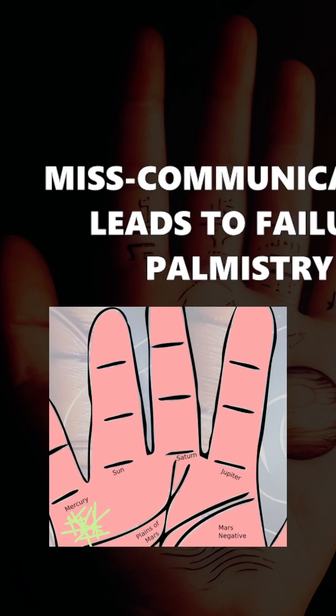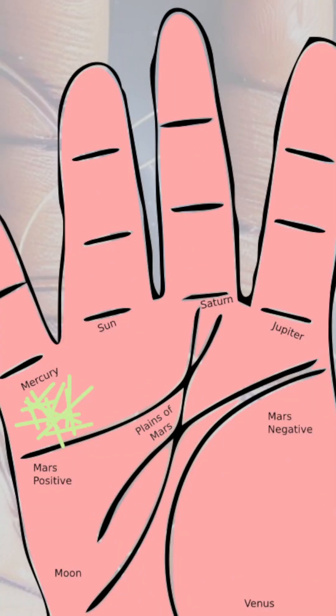How do we look at failure? We should look at the mercury mount. The mercury mount is the area for calculations and communication. If you have these kind of jumbled up lines, crisscrossing lines, that would basically mean that the chances for failure would increase.